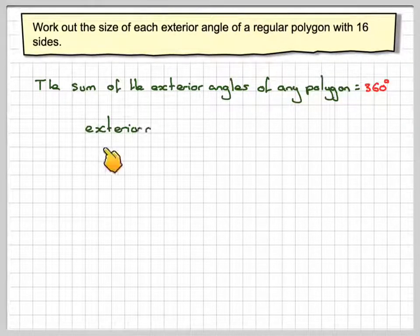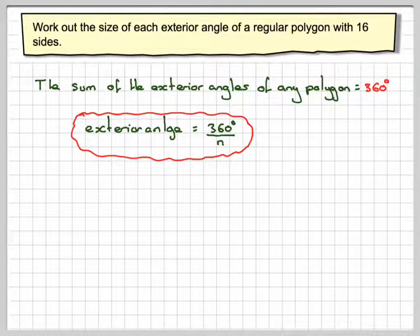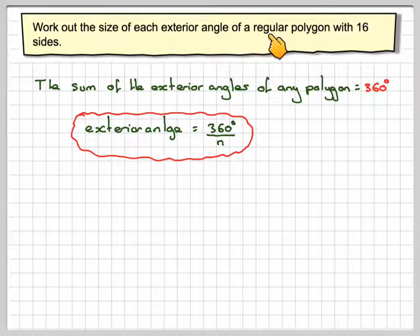So, the exterior angle will be equal to 360 divided by the number of sides for any polygon. Now this will only give you the angle if the polygon is regular, which ours is.